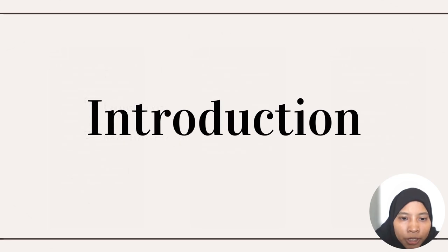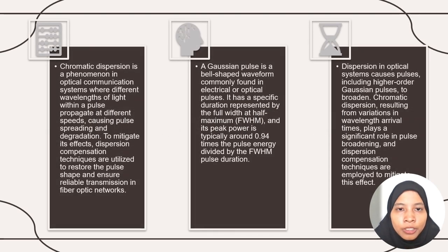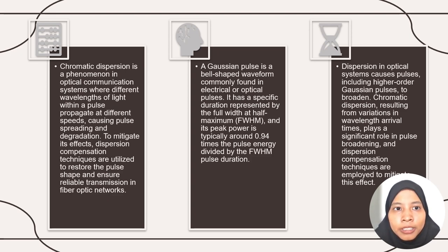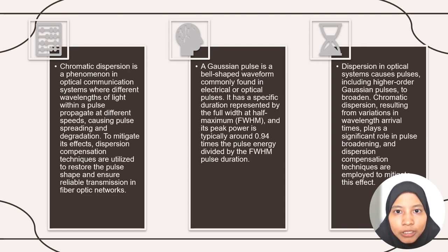For the introduction: in this assignment, we focus on chromatic dispersion and Gaussian pulses. Chromatic dispersion is a phenomenon in optical communication systems where different wavelengths of light within a pulse propagate at different speeds, causing pulse spreading and degradation. Meanwhile, a Gaussian pulse is a bell-shaped waveform commonly found in electrical or optical pulses. Dispersion in optical systems causes pulses, including higher-order Gaussian pulses, to broaden.